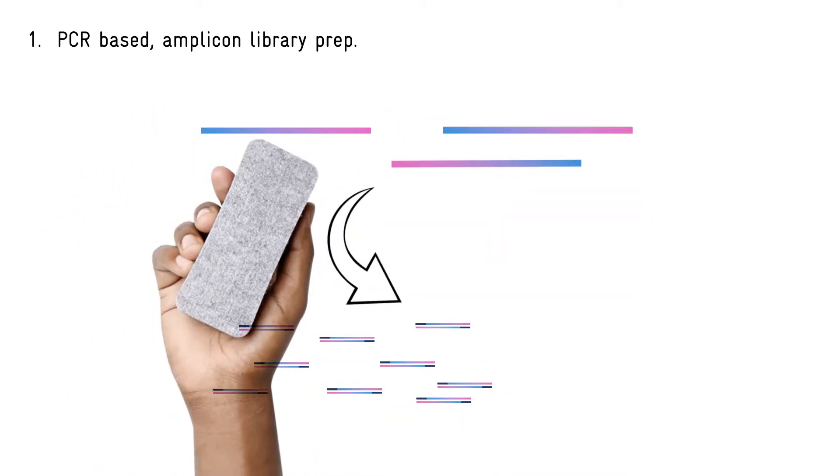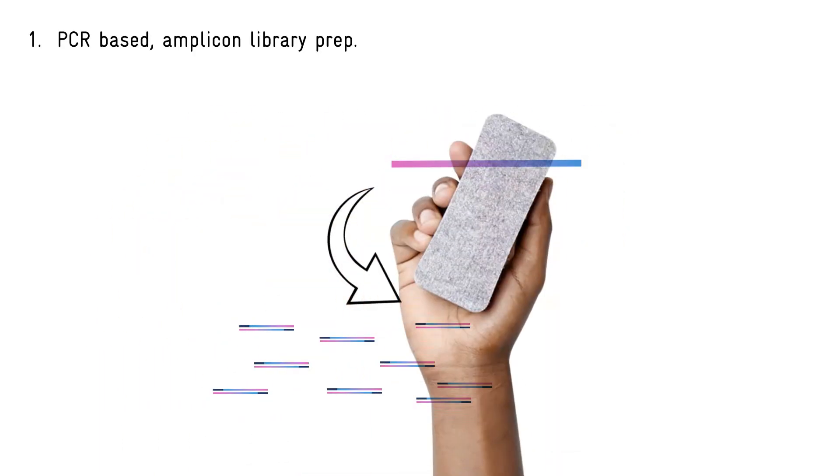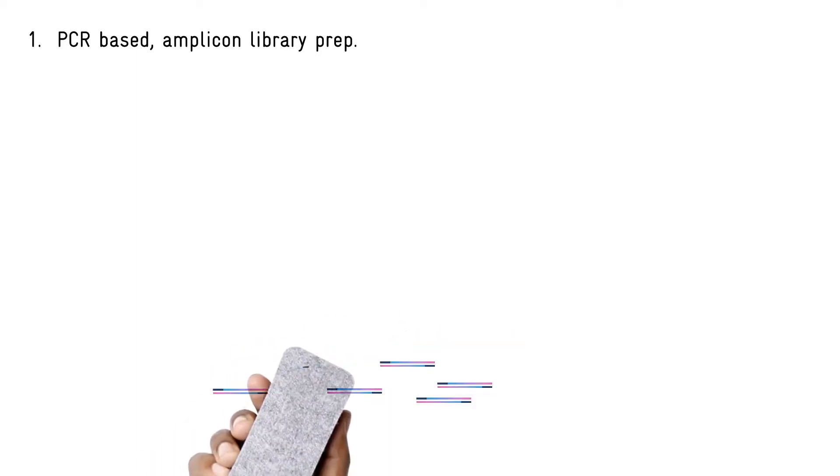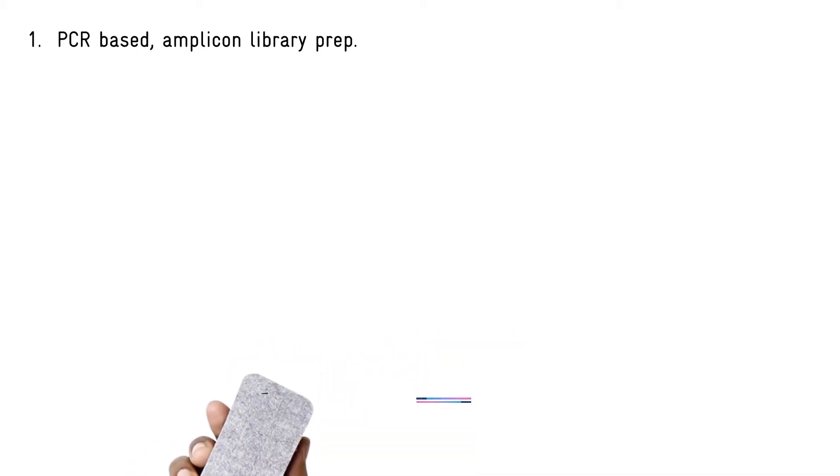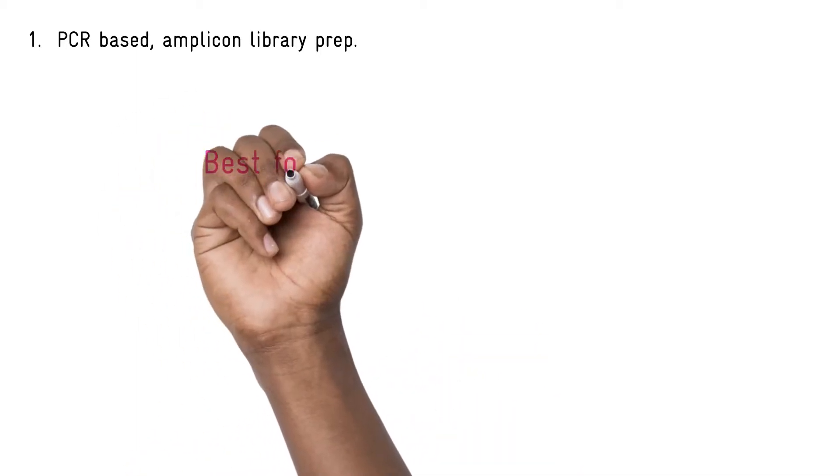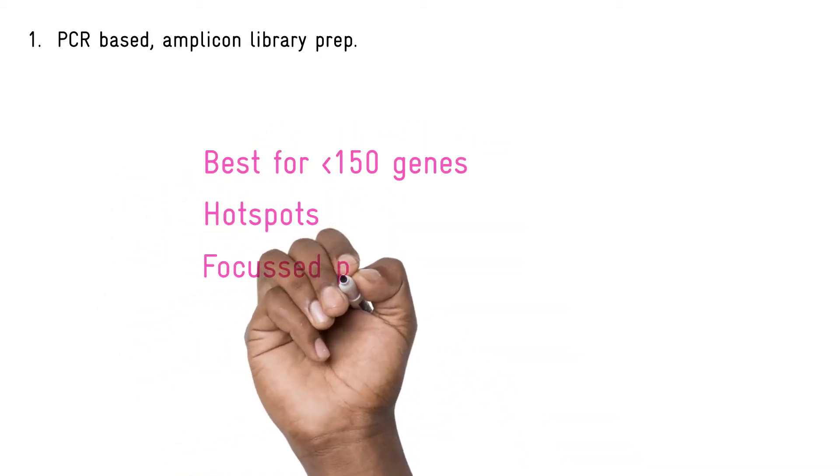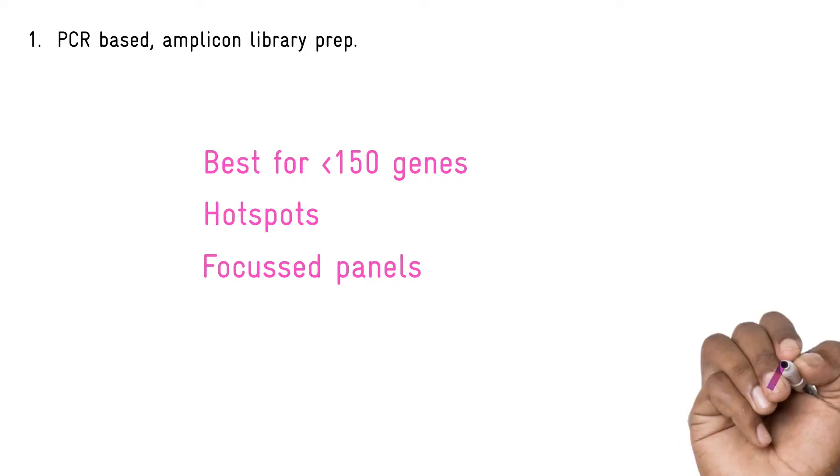Typically you will have many hundreds of PCR primer pairs in a reaction, so you have to be careful that the primers all work with similar efficiency to avoid any bias. PCR-based methods are best for targeted sequencing of a smaller number of genes, typically less than say 150. PCR-based targeted sequencing is USIC's particular area of expertise.